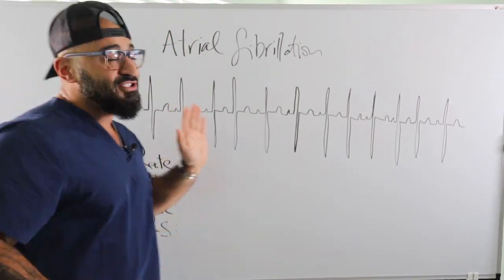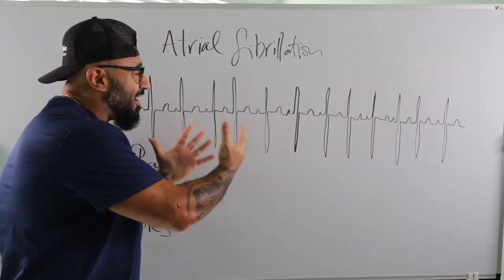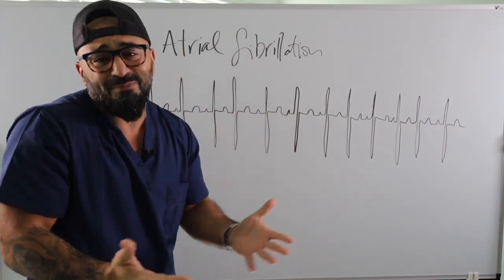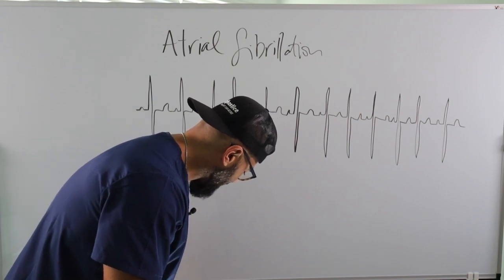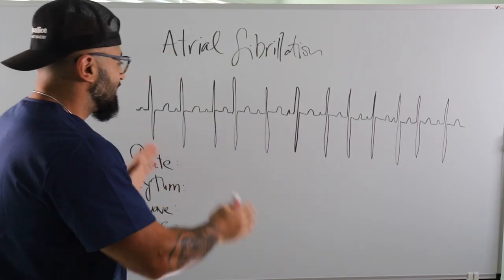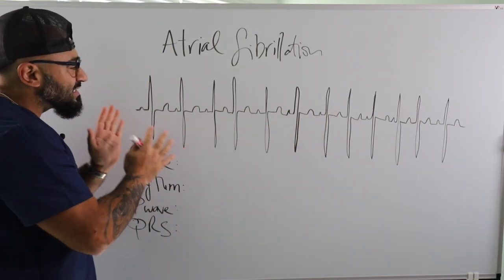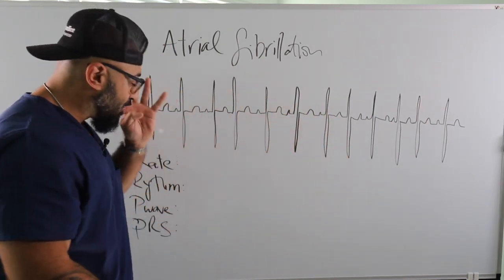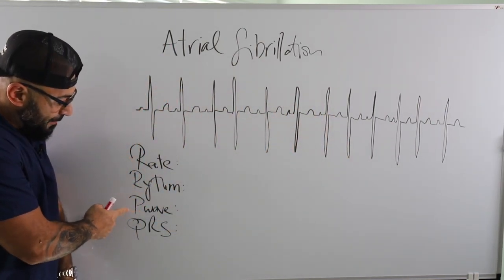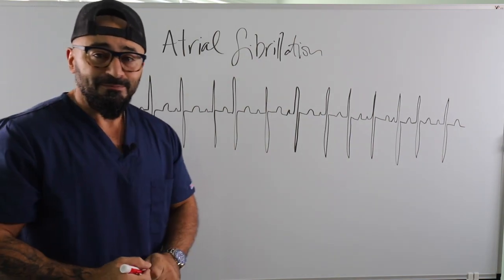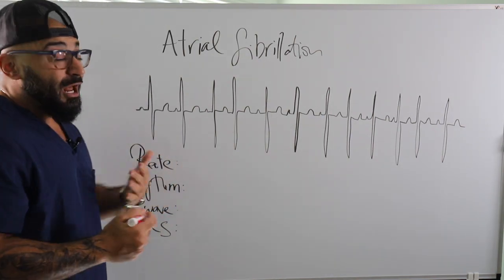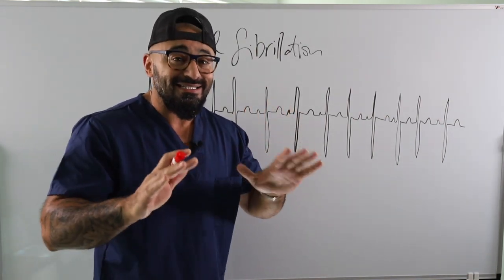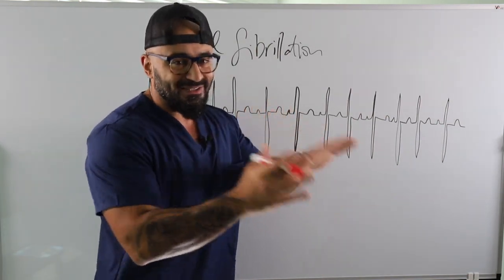This is the rhythm - I tried to draw it to the best of my abilities. You know atrial fibrillation. When you look at a rhythm, you want to highlight four things: rate, rhythm, P-wave, and QRS. So - rate. A lot of people don't know. Now this is not ECG basics, but I'm going to go over basics very quickly. A lot of people don't know how to calculate the rate.